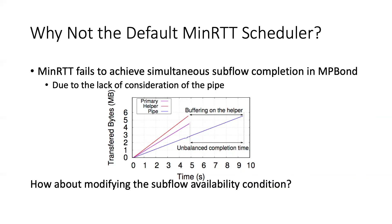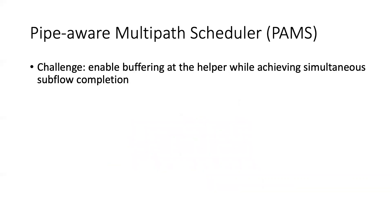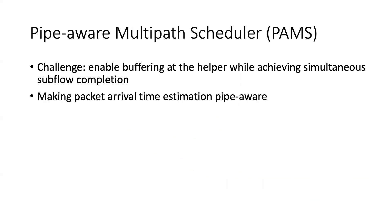A possible approach to achieve simultaneous subflow completion is to modify the subflow availability condition so that a helper subflow is considered available only when the congestion windows of both the HS path and the pipe have available space. However, this loses the capability of buffering at the helper — a key feature of MPBound. Therefore, one main challenge MPBound must address is to enable buffering at the helper while achieving simultaneous subflow completion. To this end, we propose PAMS, a pipe-aware multipath scheduler that explicitly considers the implications of buffering when making data distribution decisions.